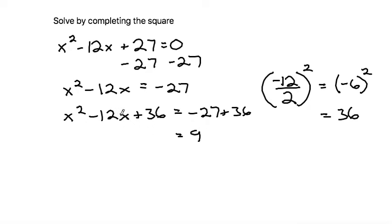To simplify the left-hand side, we want to factor this. We could look for two numbers that multiply to get 36 and add to get negative 12, but one trick is that number is always the number after you divide by 2 but before you square.